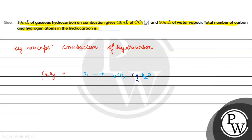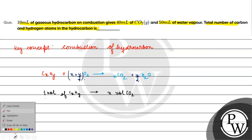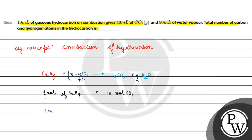From the equation, 1 volume of CxHy gives x volumes of CO2 and y by 2 volumes of H2O. So taking 1 ml of CxHy, the product side gives x ml of CO2.